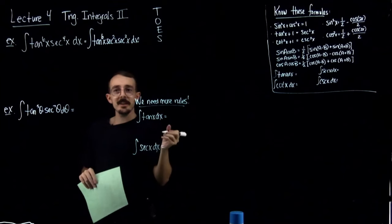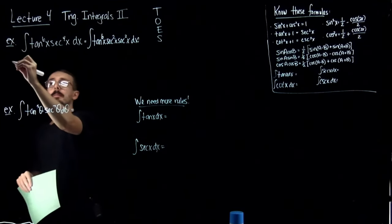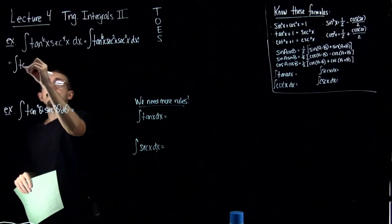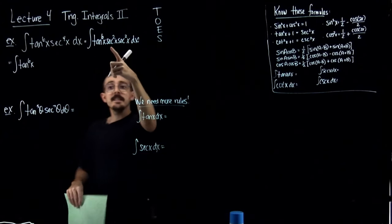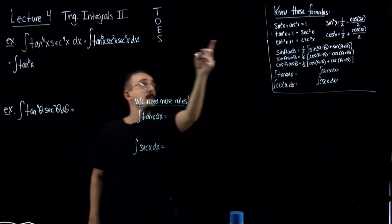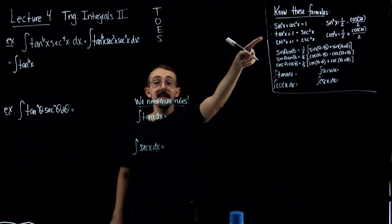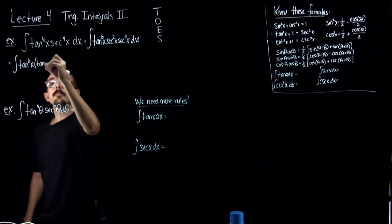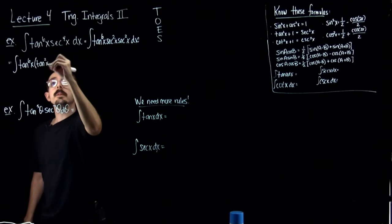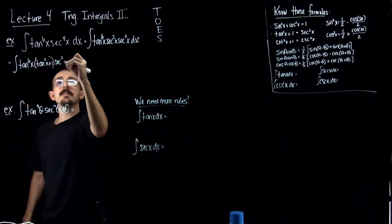I have an idea in mind, which is why I'm doing that. So this is equal to the integral of tangent to the 6th. Secant squared is one of our identities — it equals tangent squared plus 1.